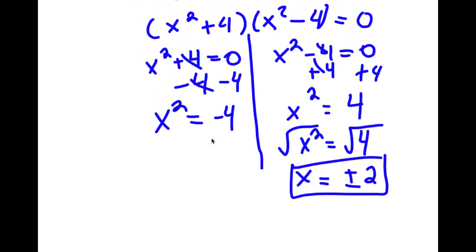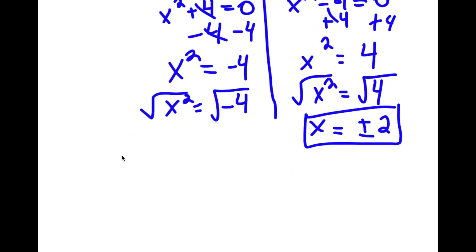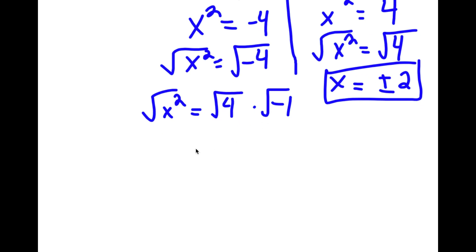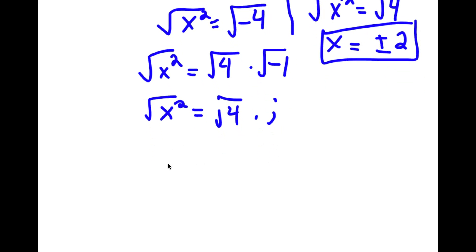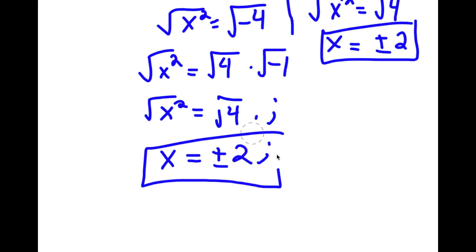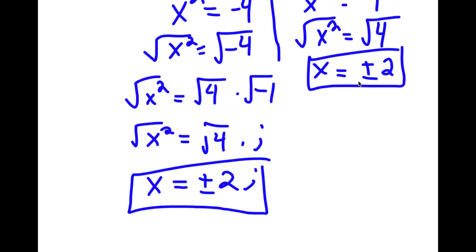Now, for x squared is equal to negative 4, I'm going to do the same thing — the square root of x squared is equal to the square root of negative 4. However, the square root of negative 4, I'm going to rewrite that as the square root of 4 times the square root of negative 1. The square root of negative 1 is equal to the imaginary number i. So I have the square root of 4 times i. The square root of x squared is x, and the square root of 4 is positive or negative 2. So I have x is equal to positive or negative 2i, and x is equal to positive or negative 2.